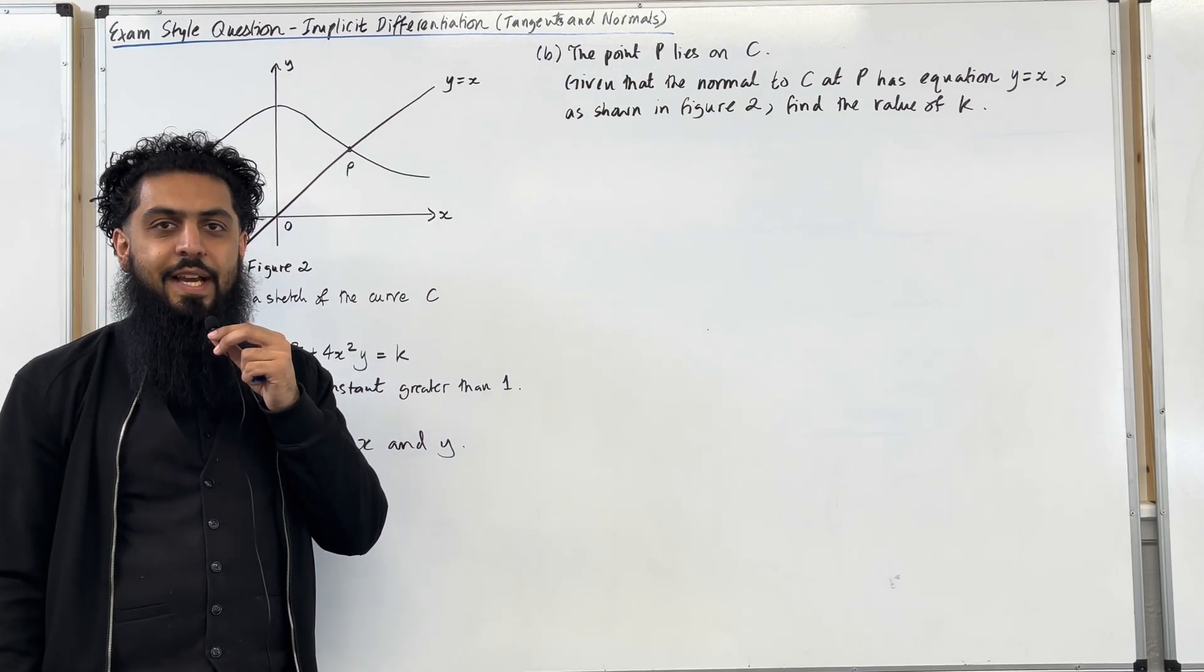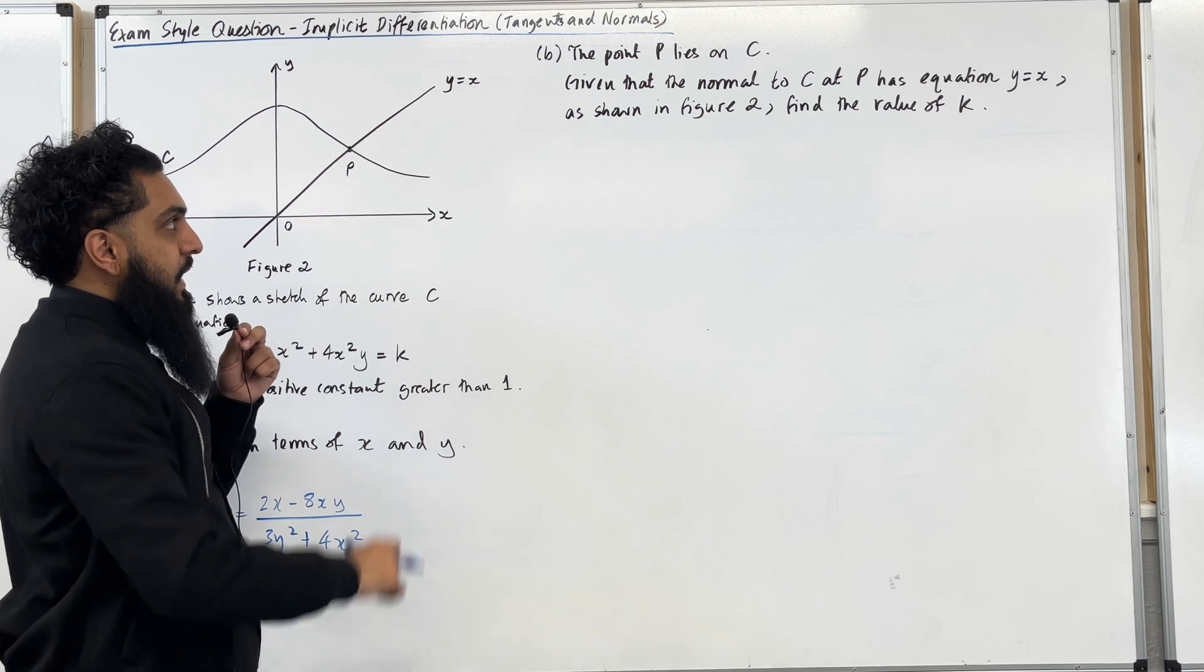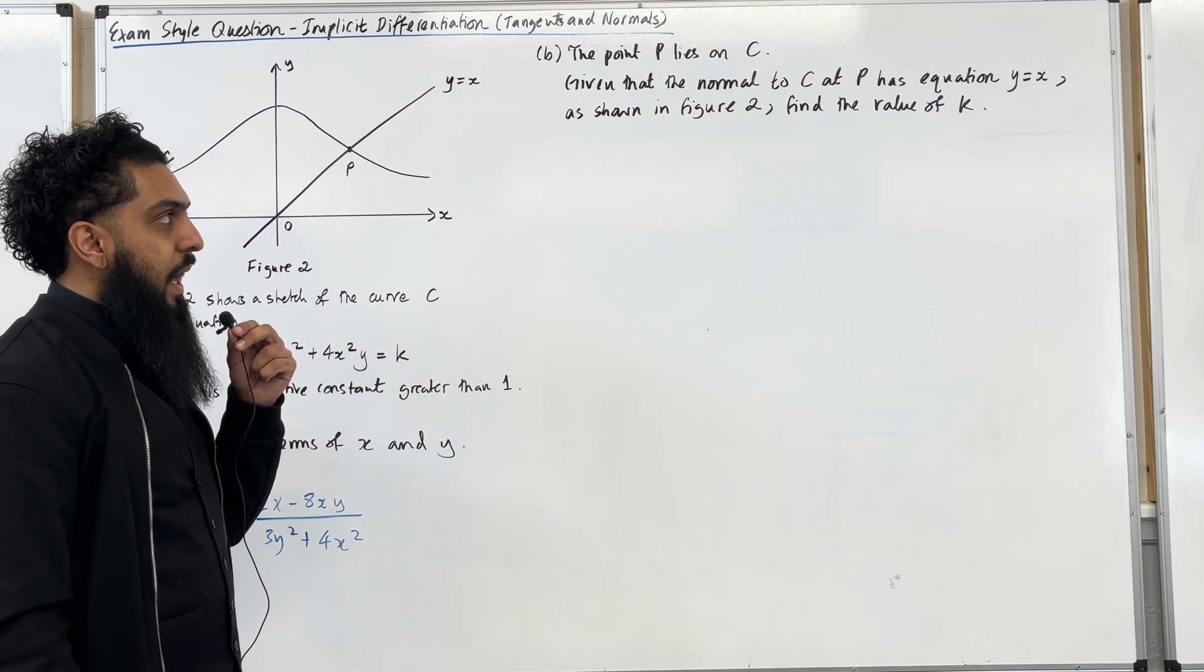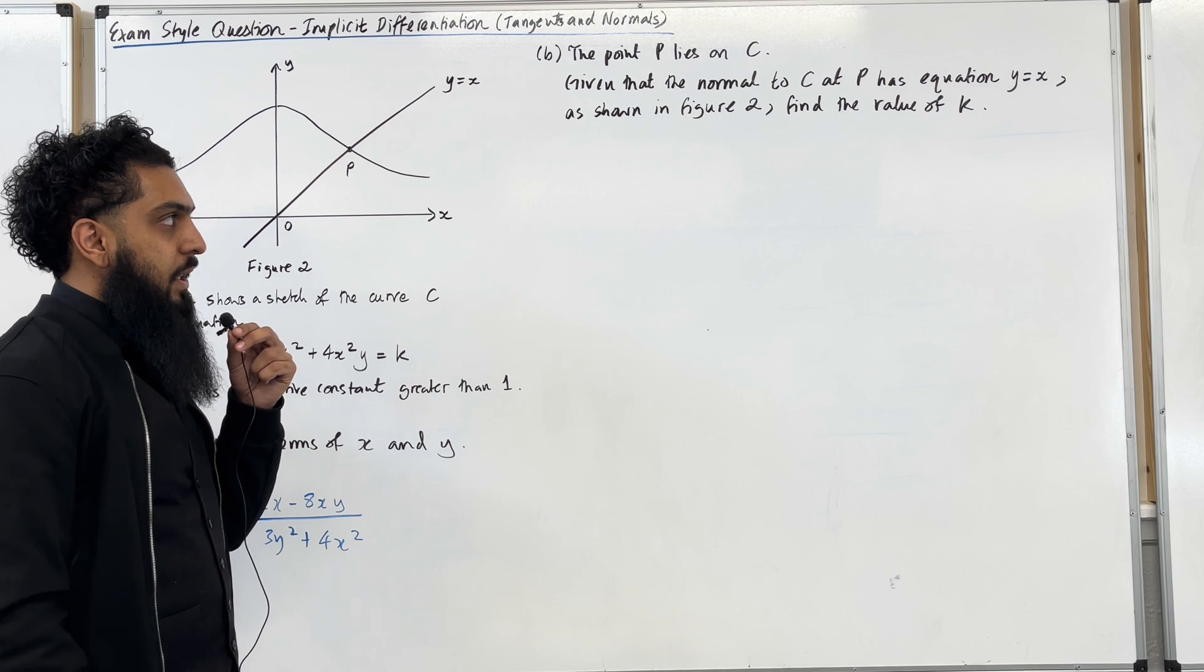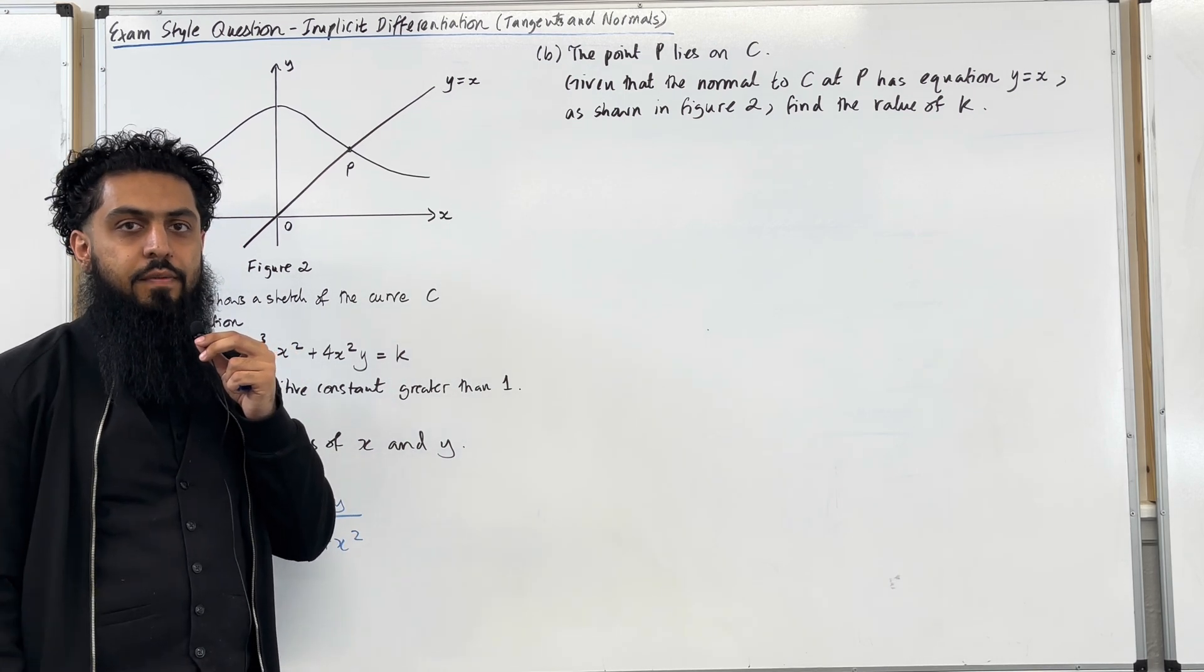Moving on to part B of the exam style question. The point P lies on C. Given that the normal to C at P has equation y equal x as shown in figure 2, find the value of k. Please pause the video, have a go at part B and then play the video.